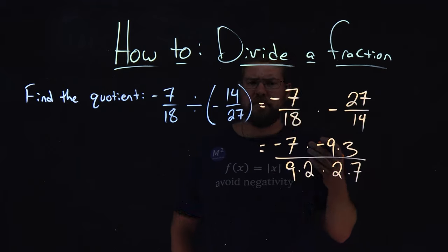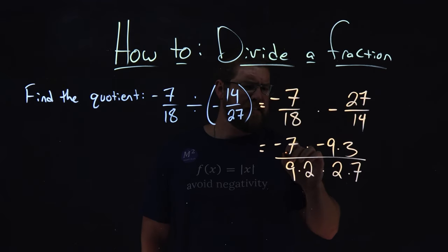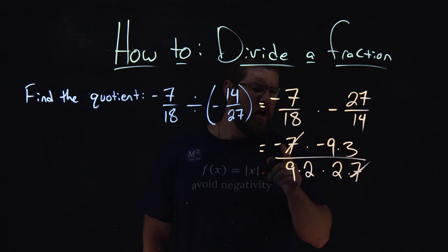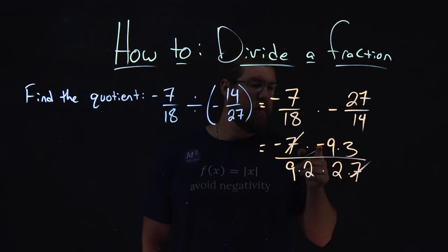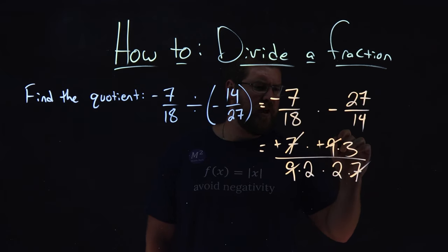Well, now let's cancel out what we can. We have a 7 here, cancels with this 7 here. If we multiply across, we have two negatives being multiplied in the numerator, that's positive. 9 and 9 cancel each other out.